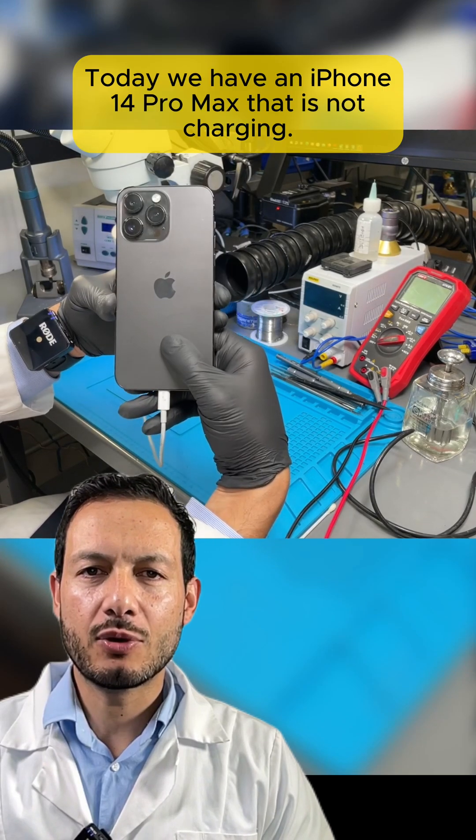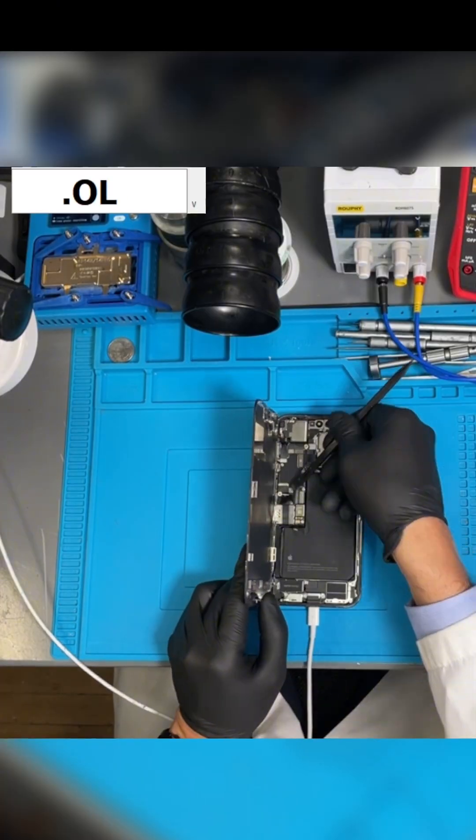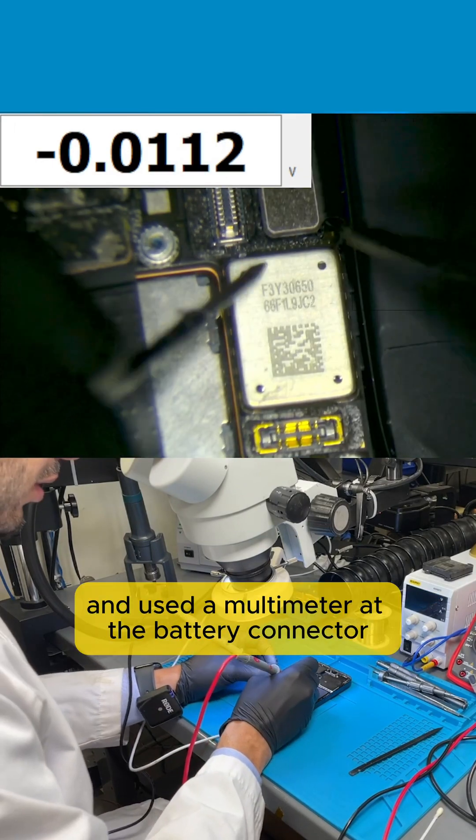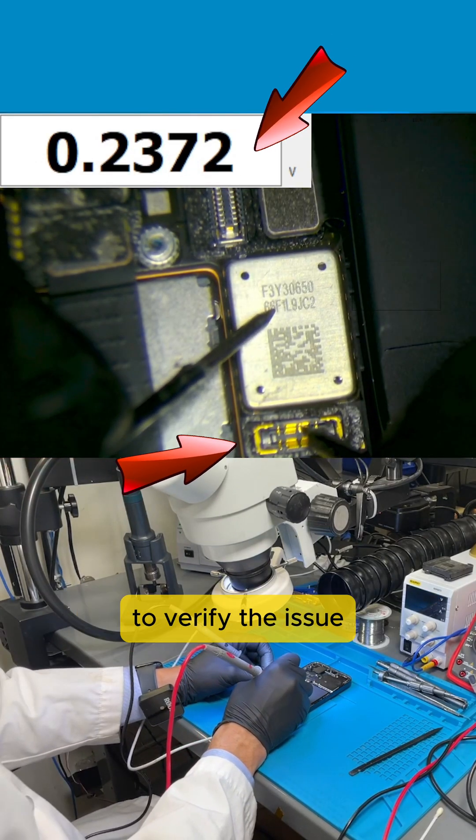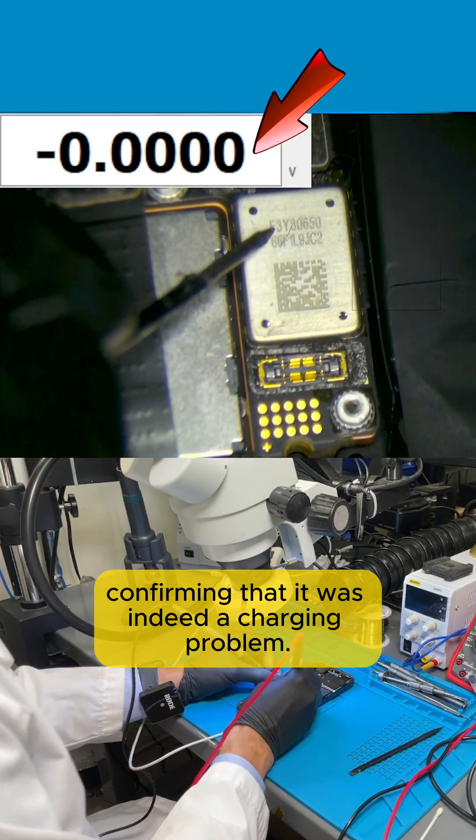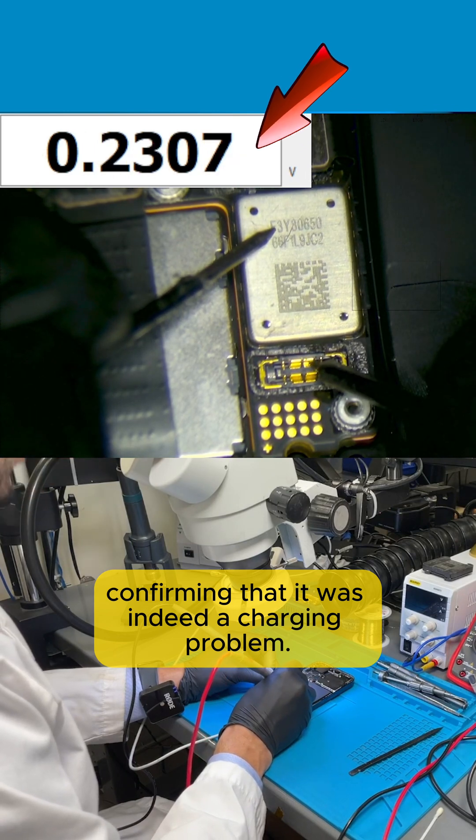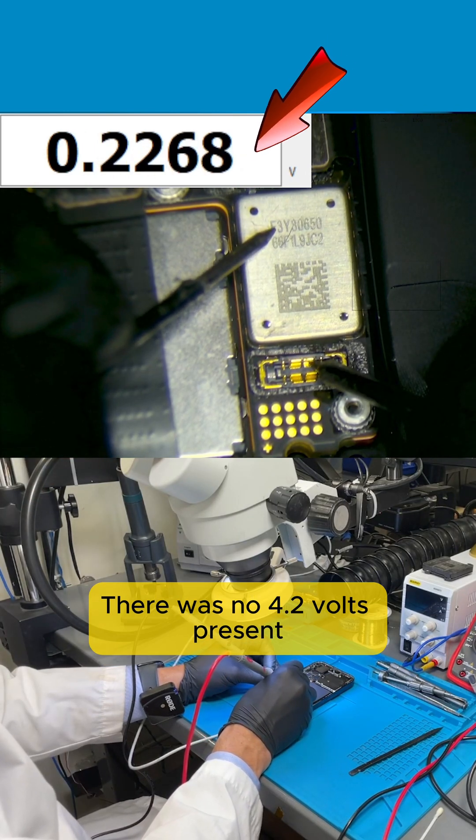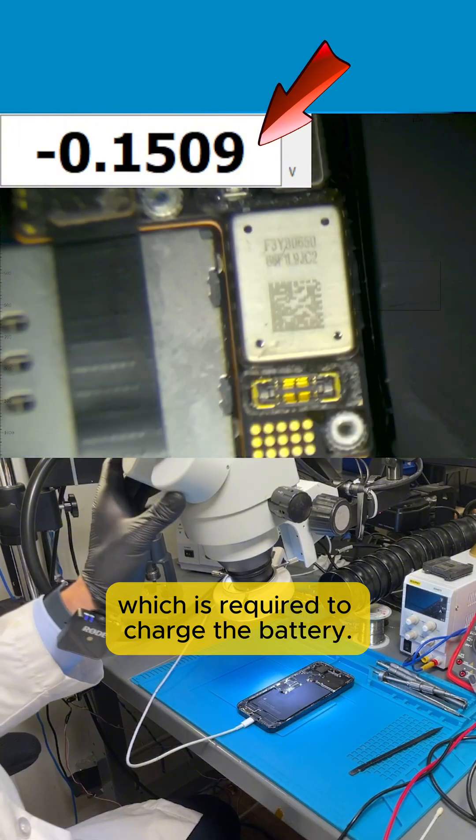Today, we have an iPhone 14 Pro Max that is not charging. We removed the screen and used a multimeter at the battery connector to verify the issue, confirming that it was indeed a charging problem. There was no 4.2 volts present, which is required to charge the battery.